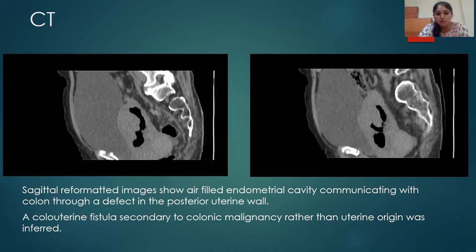There is a clear defect in the posterior uterine wall which measured about 0.5 to a maximum of one centimetre. This was a colon-uterine fistula, and it was secondary to a malignancy. With the majority of signs centering around the colon, we could say that it was a colonic malignancy rather than a uterine malignancy.